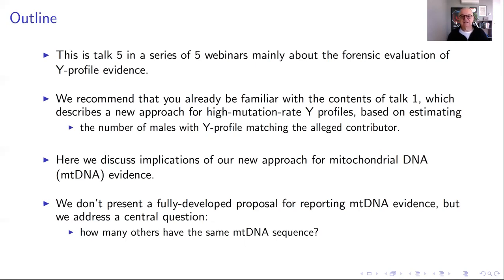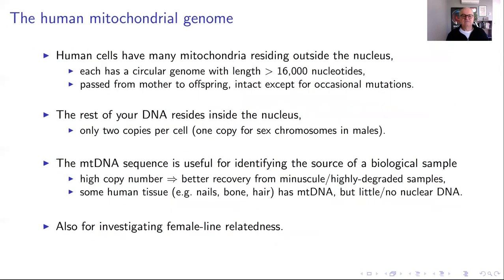A little about the mitochondrial genome: importantly, it's passed from mother to offspring — both male and female. Unlike the rest of your DNA, which is within the nucleus of a cell with just one or two copies of each chromosome, mitochondrial DNA resides in the mitochondria, which are outside the cell nucleus, in many copies. It's a small circular genome of roughly 16,000 nucleotides, and because of the many copies it's particularly useful for recovering DNA from very small or degraded samples.